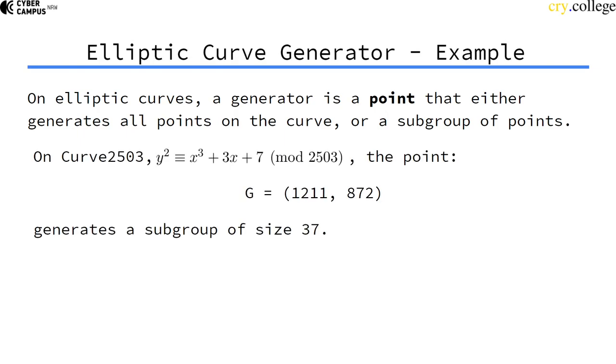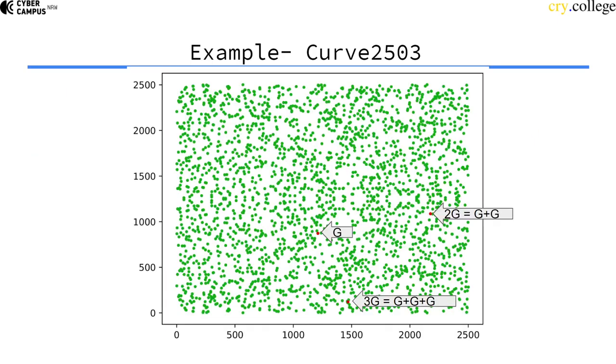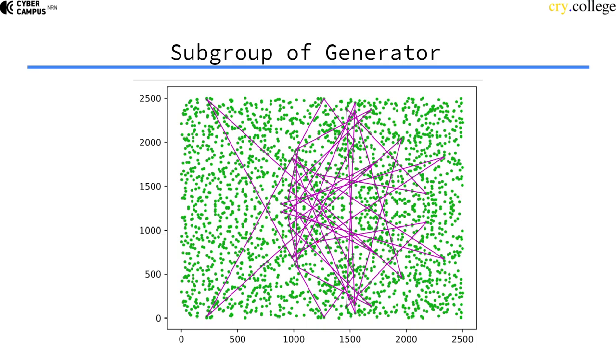So on our toy curve mod 2503, we have the point g which generates a subgroup of size 37. Now what does that mean? Well, if we add g to itself repeatedly, g, g plus g, g plus g plus g, we reach different points and after 37 of them we end up at g again.